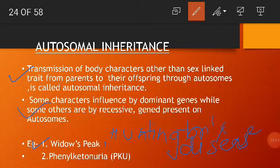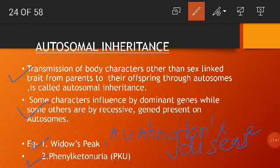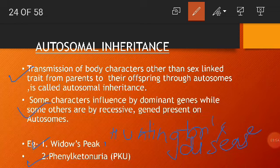Autosomal recessive traits include phenylketonuria and cystic fibrosis. In cystic fibrosis, the disease can damage the lungs and digestive system as it affects the cells that produce mucus, sweat, or digestive juices. Sickle cell anemia is also an example of an autosomal recessive trait.